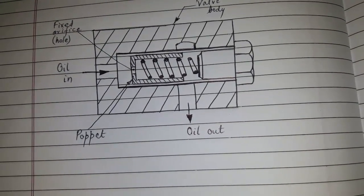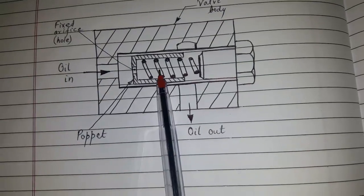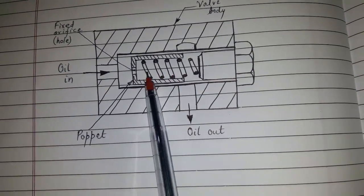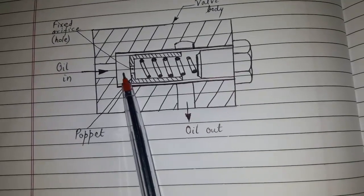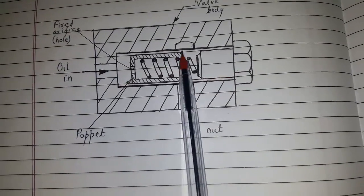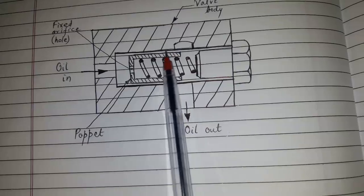During the process of poppet balancing, the spring will expand and the poppet will move towards the left, thereby uncovering the outlet port.